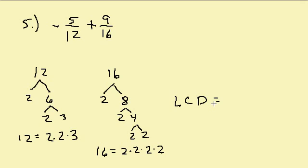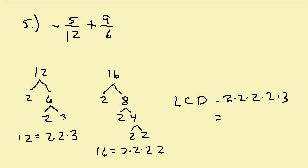To find the least common denominator, we look at each different prime factor. The factor 2 appears twice in 12 and four times in 16, so we use it four times: 2 times 2 times 2 times 2. The factor 3 appears once in 12 and zero times in 16, so we use it once. That gives us 2 times 2 times 2 times 2 times 3: 4 times 2 is 8, times 2 is 16, times 3 is 48. So our common denominator is 48.